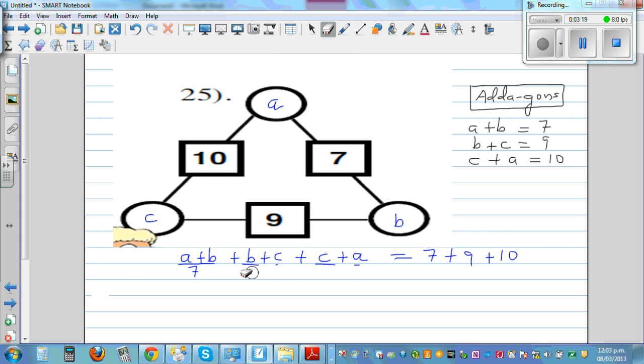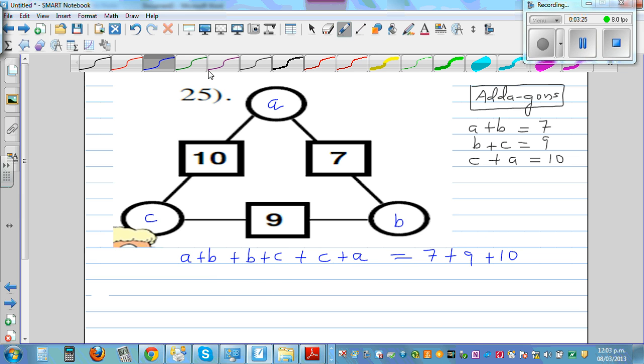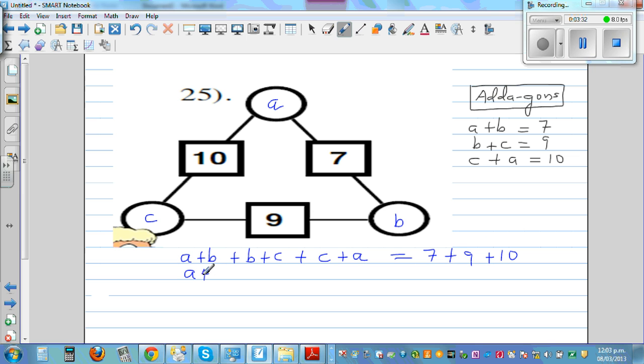This is where algebra makes your life very easy. The only thing is you have to go through a process. Can I write this as A plus A? You're adding so you can add in any order. A plus A plus B plus B plus C plus C equals 7 plus 9 is 16, plus 10 is 26. This is 2A plus 2B plus 2C equals 26.